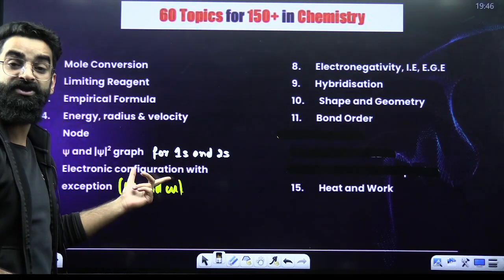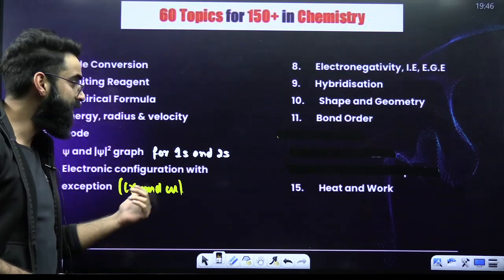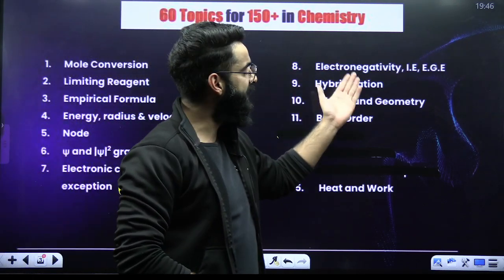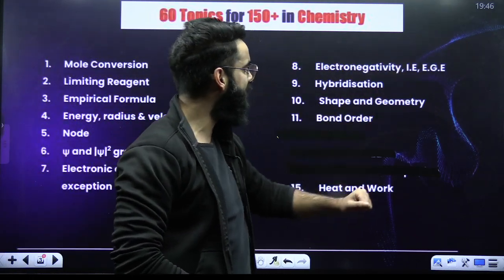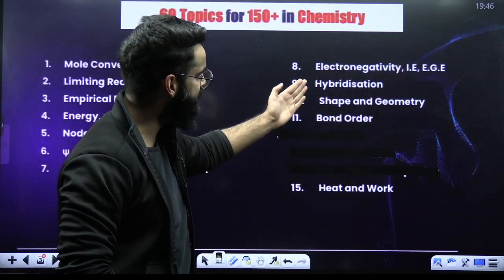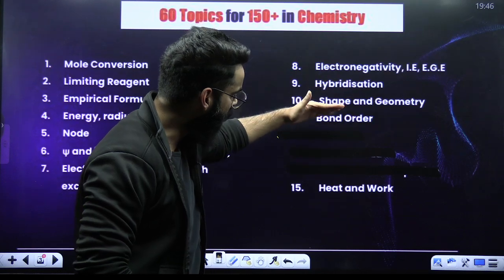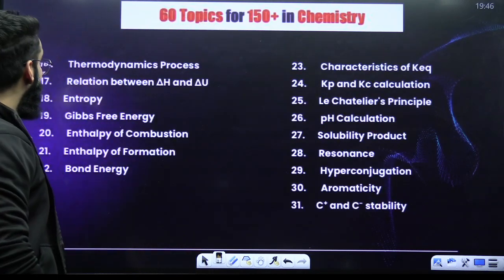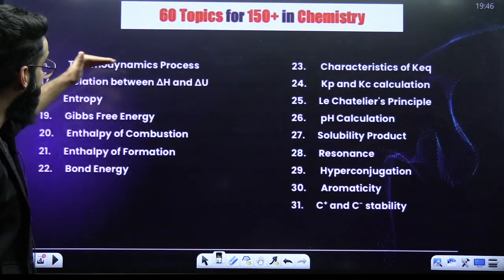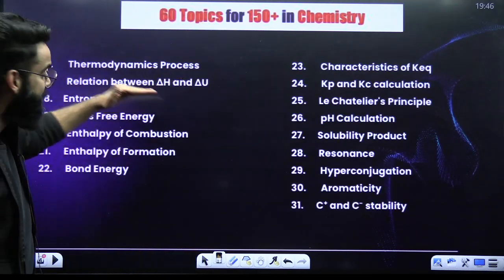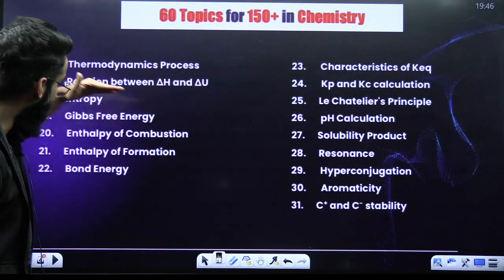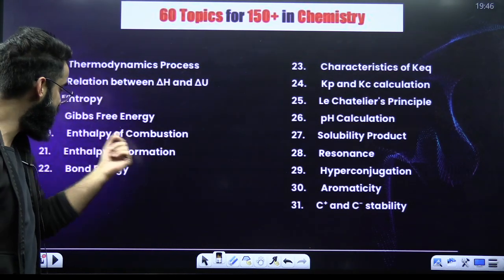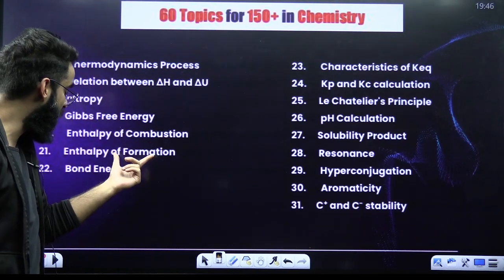Electronic configurations with exceptions involving chromium and copper, electronegativity, ionization energy, electron gain enthalpy, hybridization, shape and geometry, bond order, heat and work from thermodynamics, thermodynamic processes, relation between delta S and delta U, entropy and Gibbs free energy, enthalpy of combustion, enthalpy of formation, and bond energy.